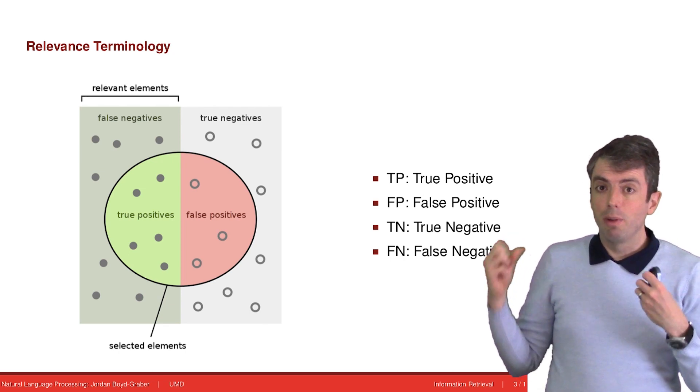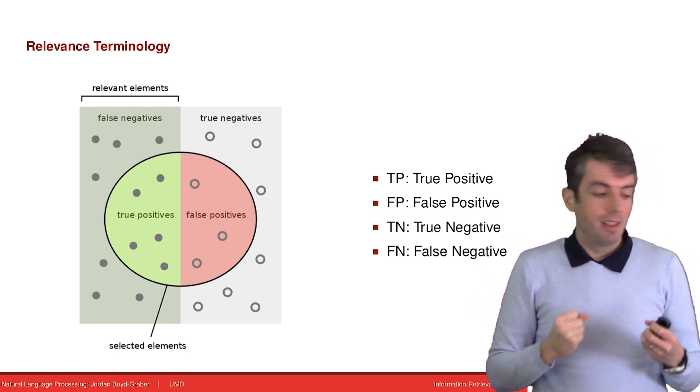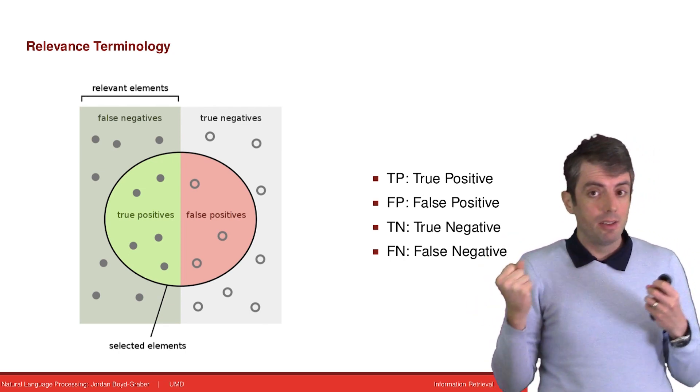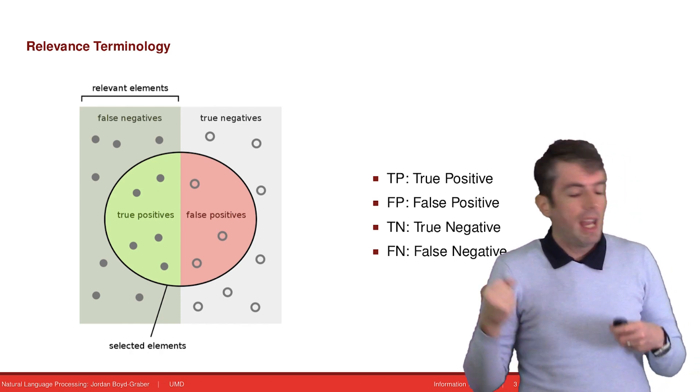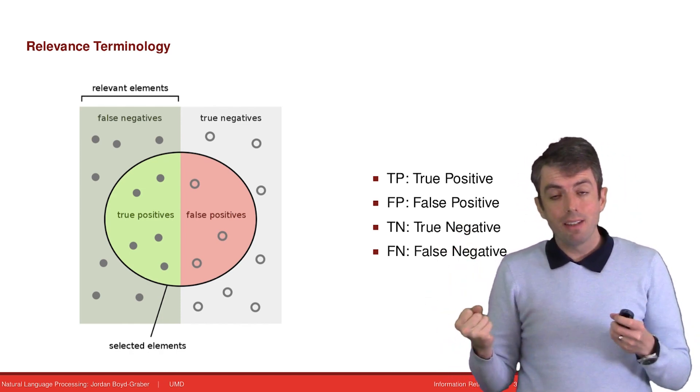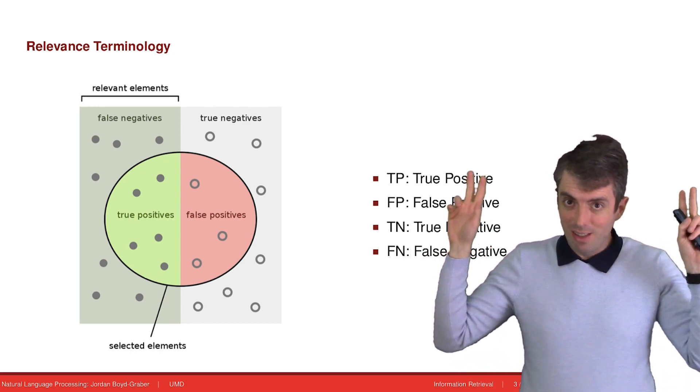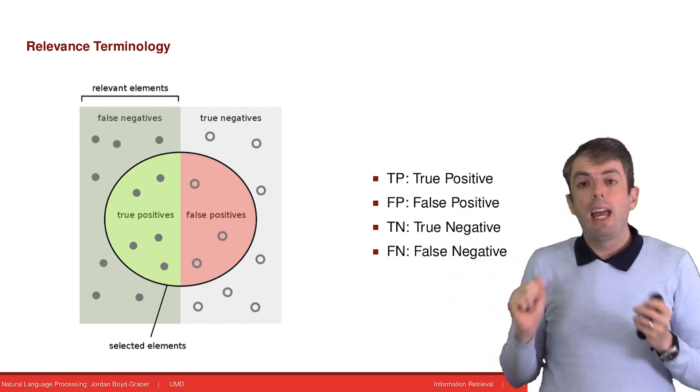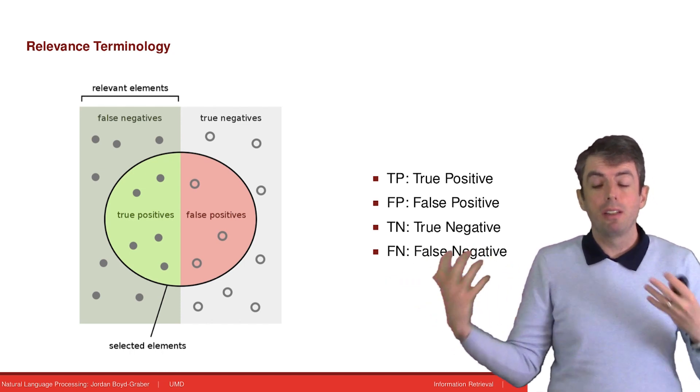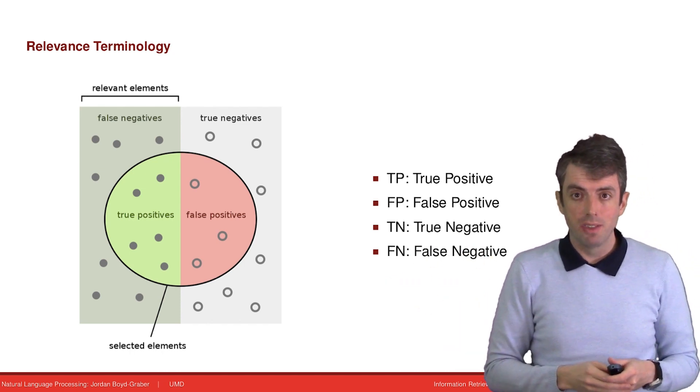Okay, so these are the ways that you can be right: true negatives and true positives. Taken together, those two classes are your system getting things right. And how do we characterize these in terms of numbers that we can use to describe how well our system is doing?